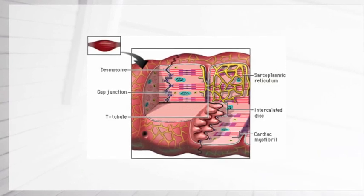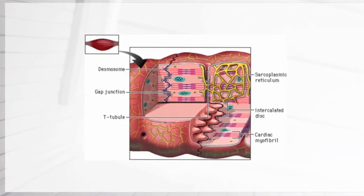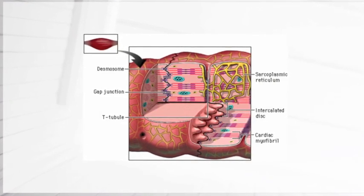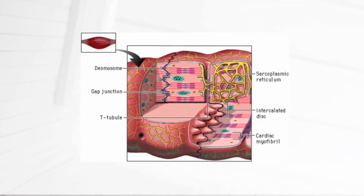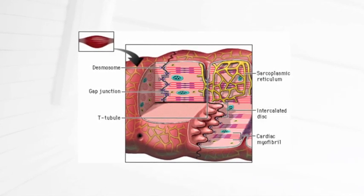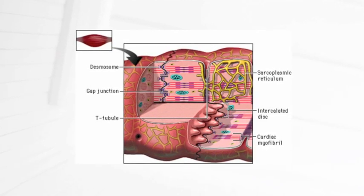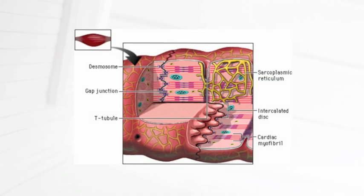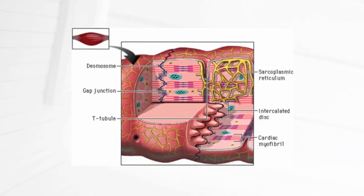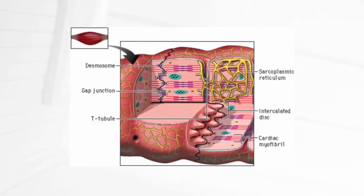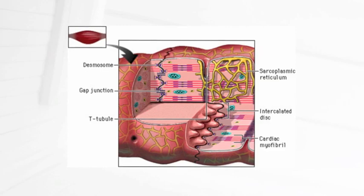As you see in the picture, the T-tubules, also called the transverse tubules, are there to send the impulse of the contraction to inside the cell. The sarcoplasmic reticulum that you see in the top right corner releases calcium ions when the cell contracts and takes them in when not.